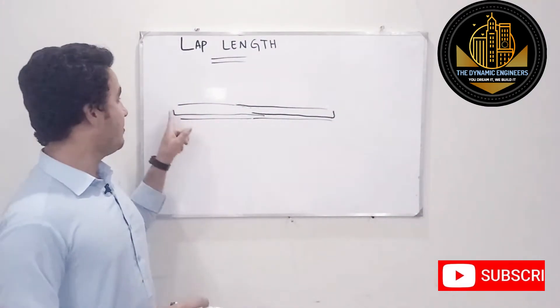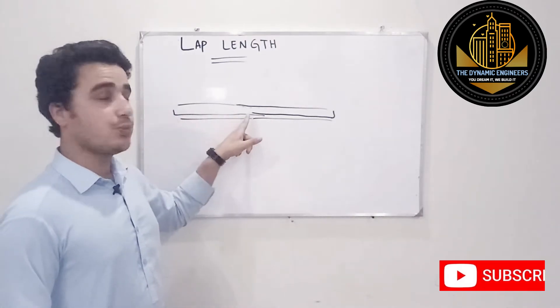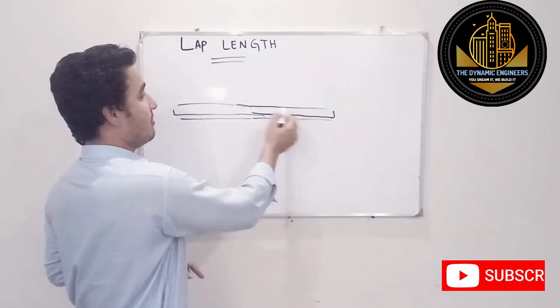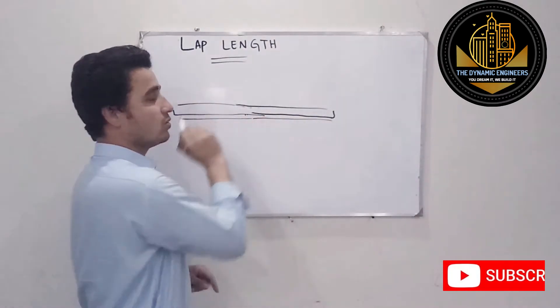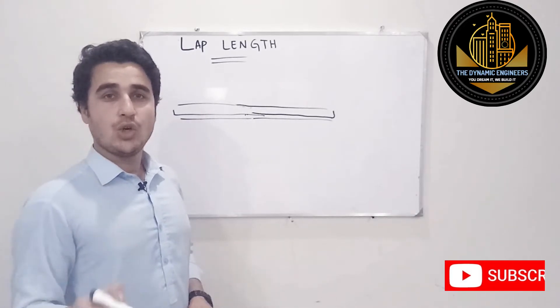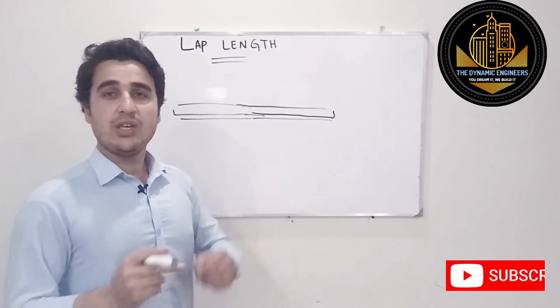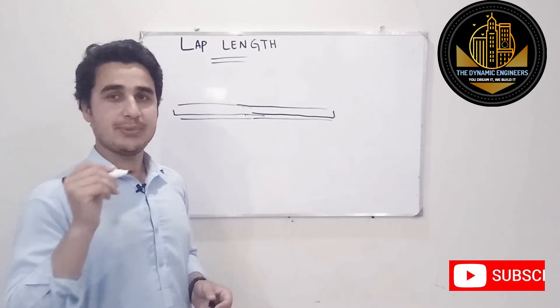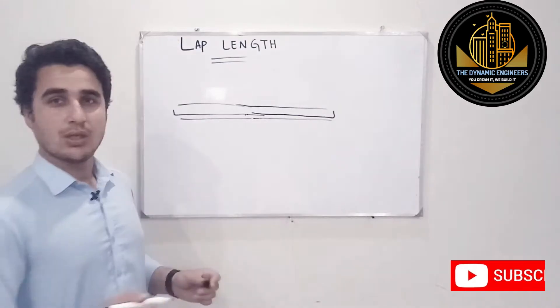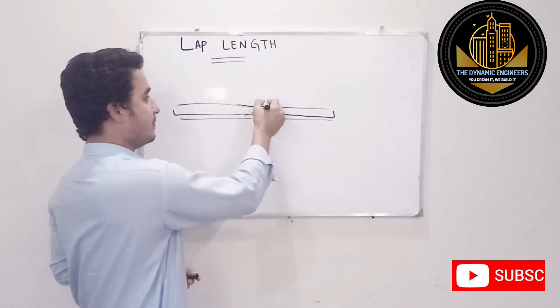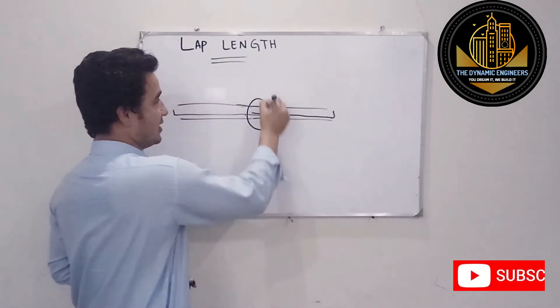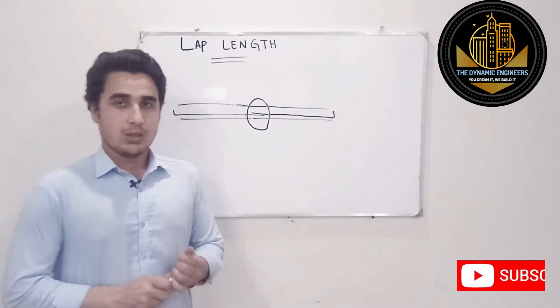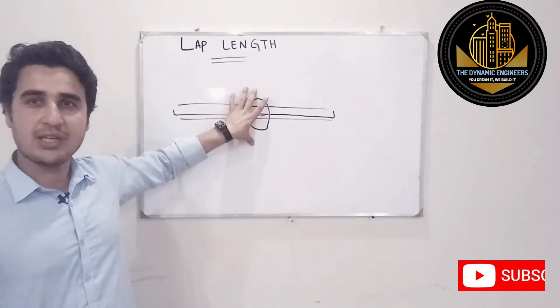Now if the bar length is 12 meters, then we will have to provide a length, a bar which will transfer the load from this bar to this bar and this bar to this bar. Now that length which is required when we are going for a member longer than 12 meters is the lap length. Like here in this beam, you can see this length is the lap length of this bar.